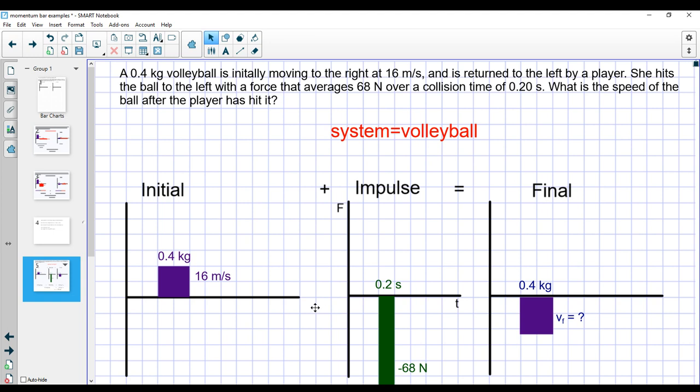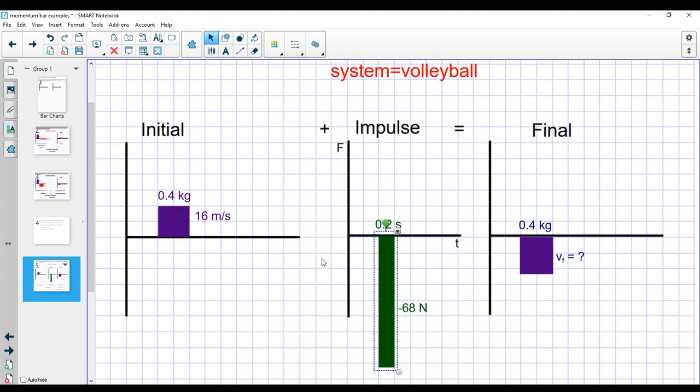Now the final momentum of the ball, I know that the ball is going to be moving to the left after the player hits it, but I don't know how fast. I do know that the mass of the ball hasn't changed. So I'm going to have a negative because moving to the left opposite direction, I'm going to have a negative final velocity, but I don't know how much. I do know though, that the player has changed the momentum of the ball based on that hit and the impulse.